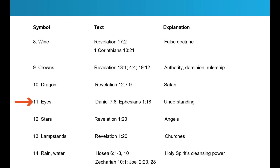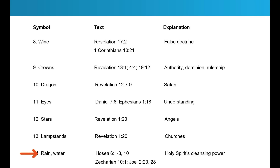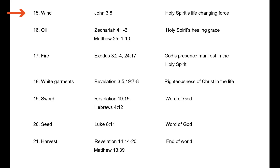Here's the second principle: understand the great controversy theme in the book of Revelation. Every major line of prophecy portrays a controversy between Christ and Satan — between Jesus Christ, the Lamb of God, and Satan the dragon, and of course the beast. Understand when you're reading Revelation that there is this great controversy between good and evil, between Christ and Satan. Read it with those eyes and it'll come to life to you.